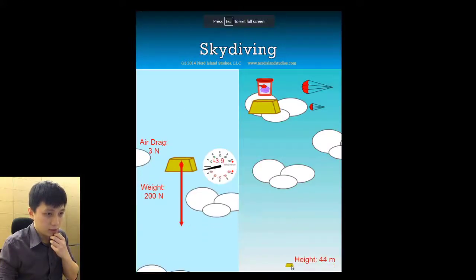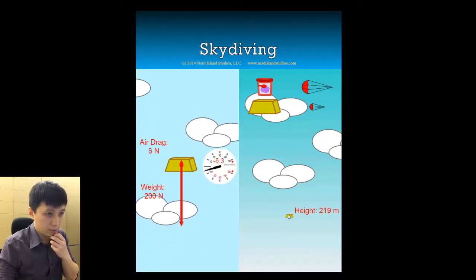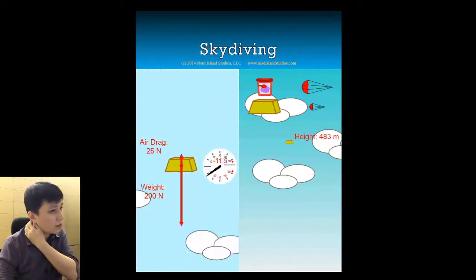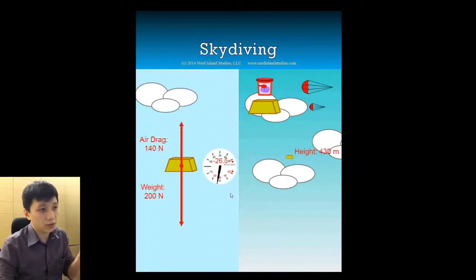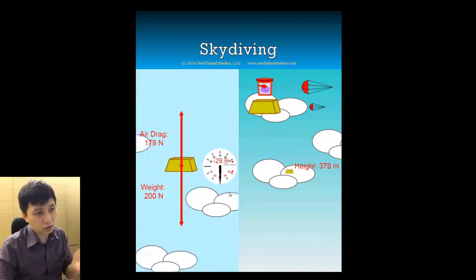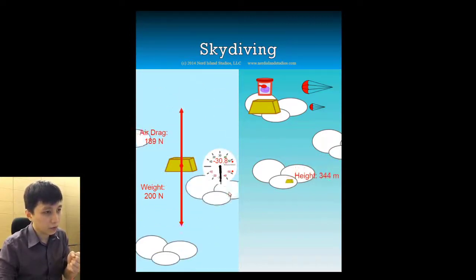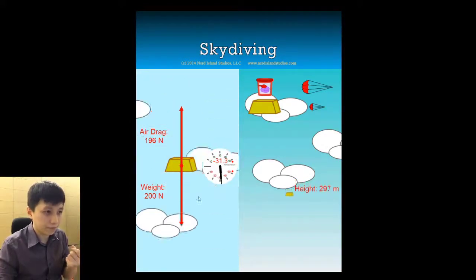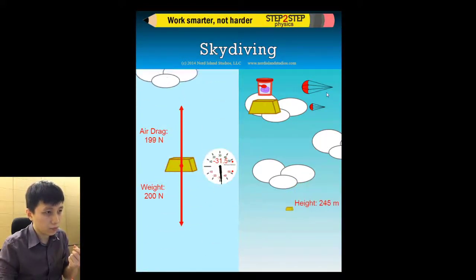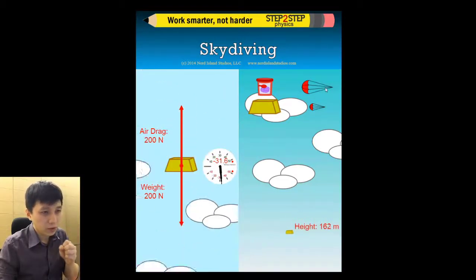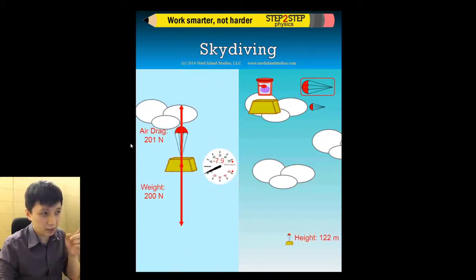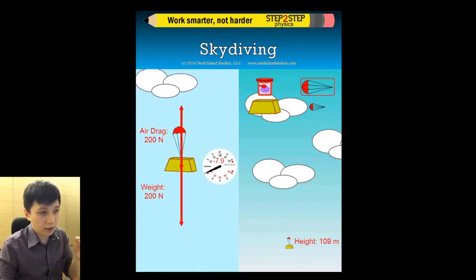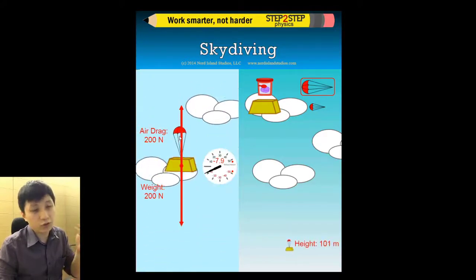Drag the brick to the top. The same thing happens — air resistance reaches 200 Newton and the speed reaches terminal velocity when both forces are equal. About this time we deploy the parachute. You can see air resistance increased so much at that instant — it's larger than 200 Newton. Then it reaches 200 again.